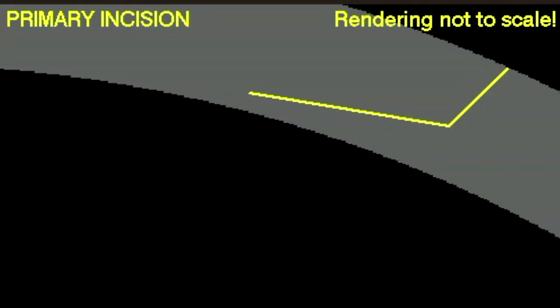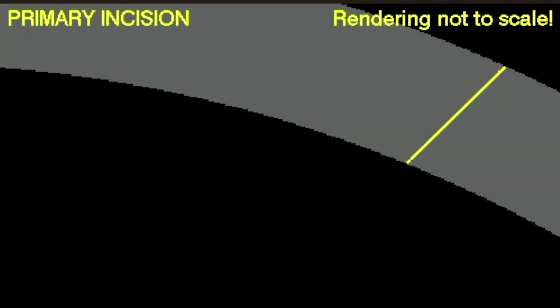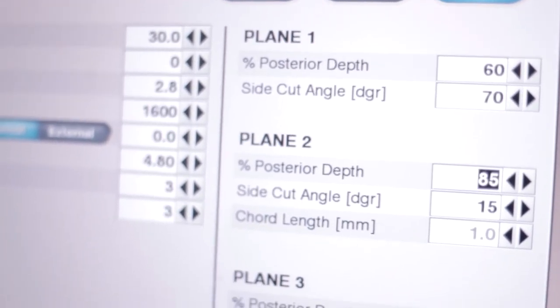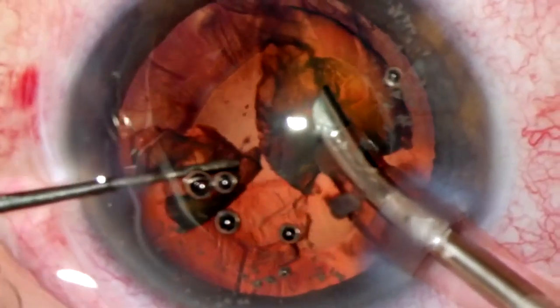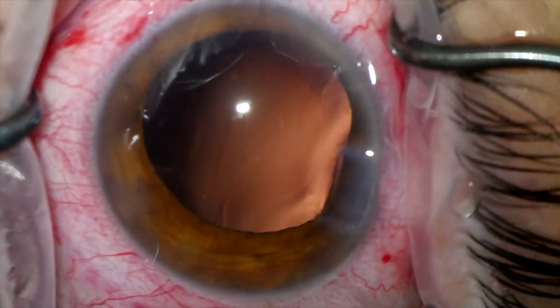Although it is possible to configure bi-planar or even single-plane incisions, a three-plane incision, in our opinion, allows for best stability and predictability of results, both during and after phacoemulsification.